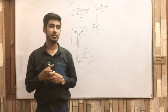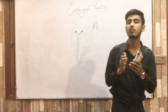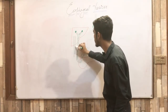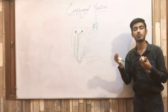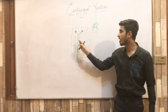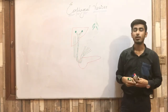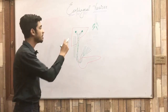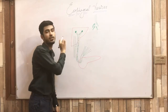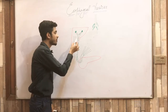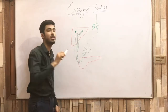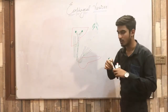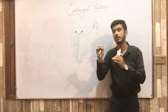Whenever portal hypertension develops, there is a compensating mechanism in our body that tries to overcome it. Certain collateral channels start to develop, called portocaval shunts, because they are formed between the portal vein and the inferior vena cava. These shunts help the blood from the portal vein to drain into the inferior vena cava and then to the heart, helping to overcome portal hypertension, but only to a limited extent.